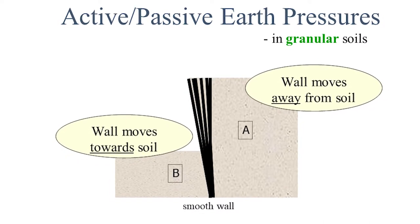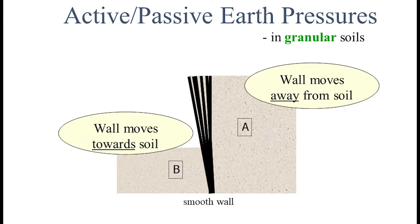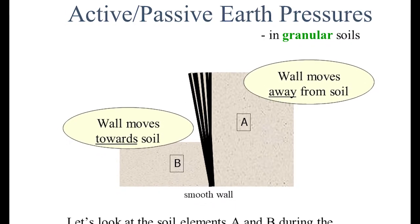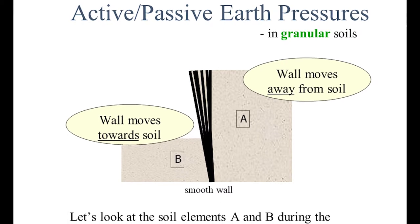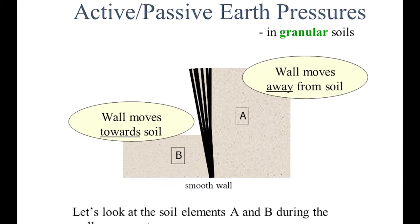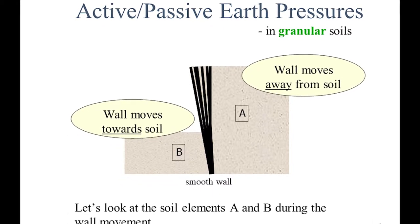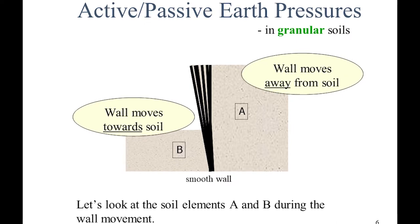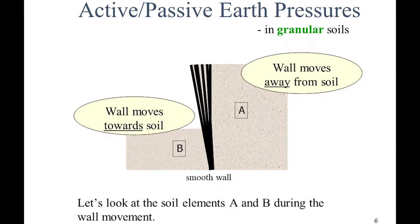Considering active and passive earth pressure in granular (sandy) soils: when the wall moves away from the soil, that is active earth pressure; when the wall moves towards the soil, that is passive earth pressure.